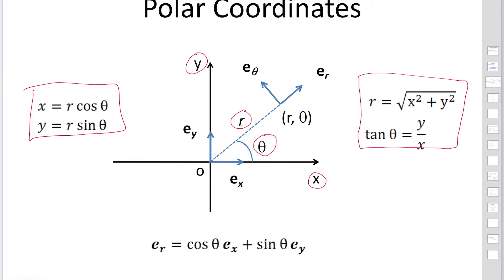The unit vector e_x has magnitude 1 and points along the x-axis; e_y has magnitude 1 and points along the y-axis. The unit vector e_r is directed radially with magnitude 1, and e_theta also has magnitude 1, is perpendicular to e_r, and points in the direction of increasing theta. We want to convert between e_r, e_theta and e_x, e_y.